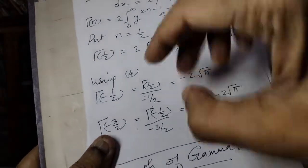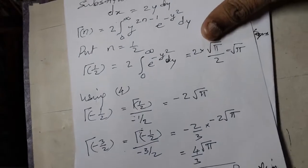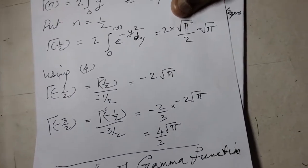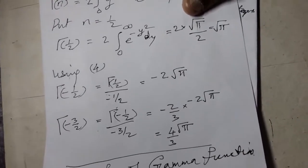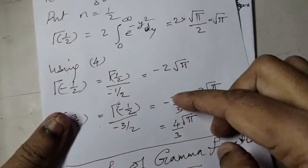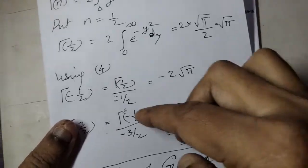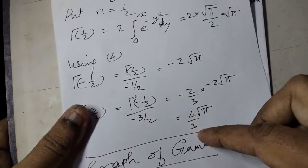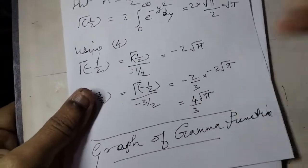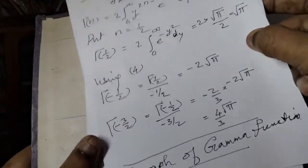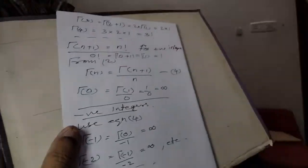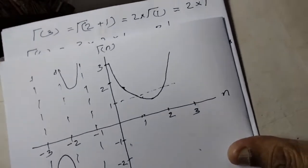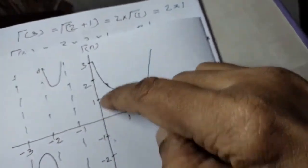Applying the recursion formula again for gamma(minus 3/2): gamma(minus 3/2) equals gamma(minus 1/2) divided by minus 3/2, which gives minus 2 by 3 times gamma(minus 1/2) = minus 2 by 3 times minus 2 root(pi) = 4 by 3 root(pi). In the graphical representation of the gamma function, positive values approach gamma(0).